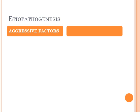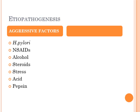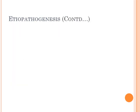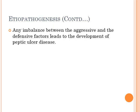Coming to the etiopathogenesis: there are aggressive factors and defensive factors in the stomach. The aggressive factors that lead to ulcer formation are Helicobacter pylori, NSAIDs, alcohol, steroids, stress, acid, and pepsin. The defensive factors are the mucus layer, bicarbonates, mucosal blood flow, prostaglandins, and the process of epithelial cell renewal. Any imbalance between these aggressive and defensive factors leads to the development of peptic ulcer disease.